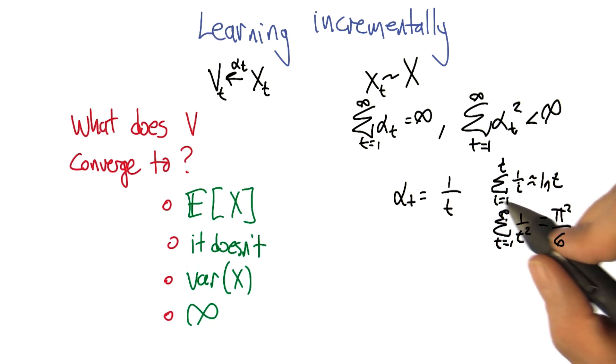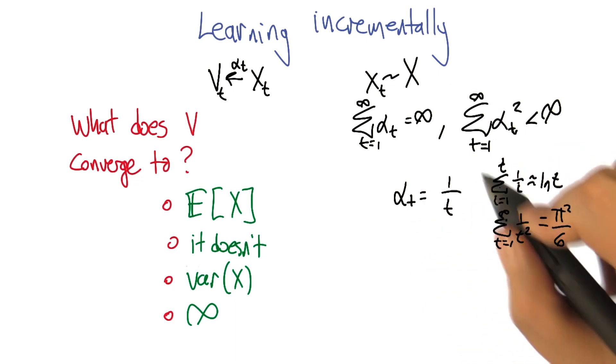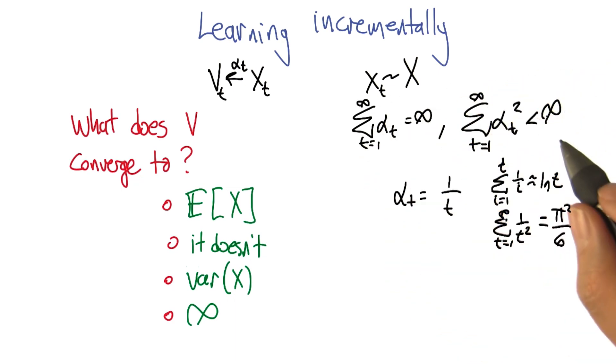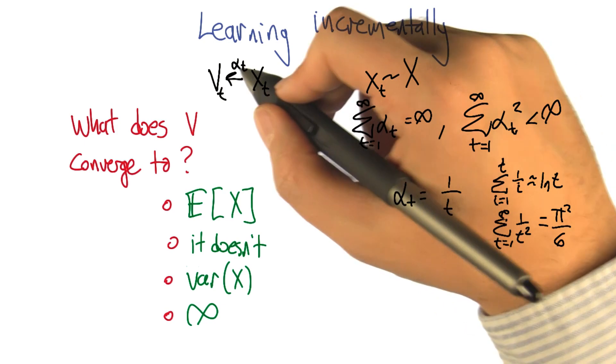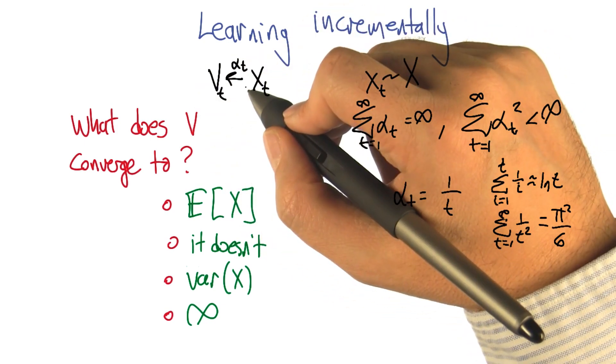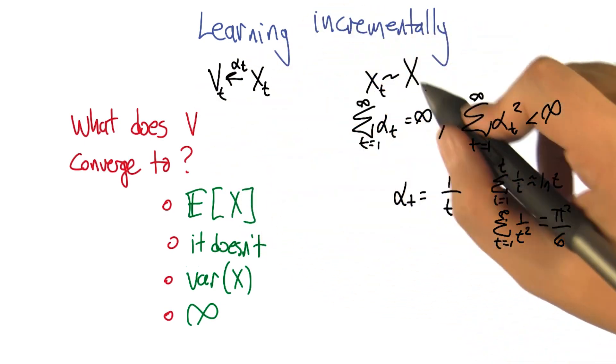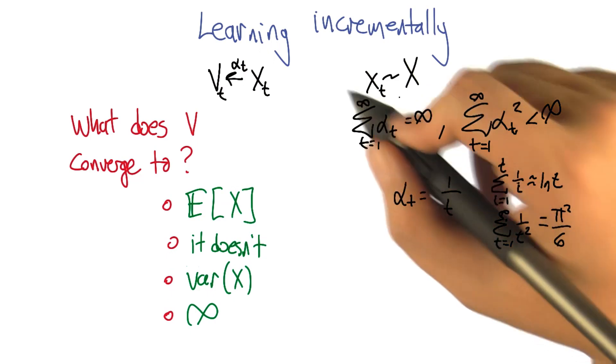The point is that there's a bunch of sequences of learning rates that satisfy this property, and we're going to imagine that we have a sequence of learning rates that satisfies this property. We're going to be updating v sub t with a series of x values drawn from some distribution big X.